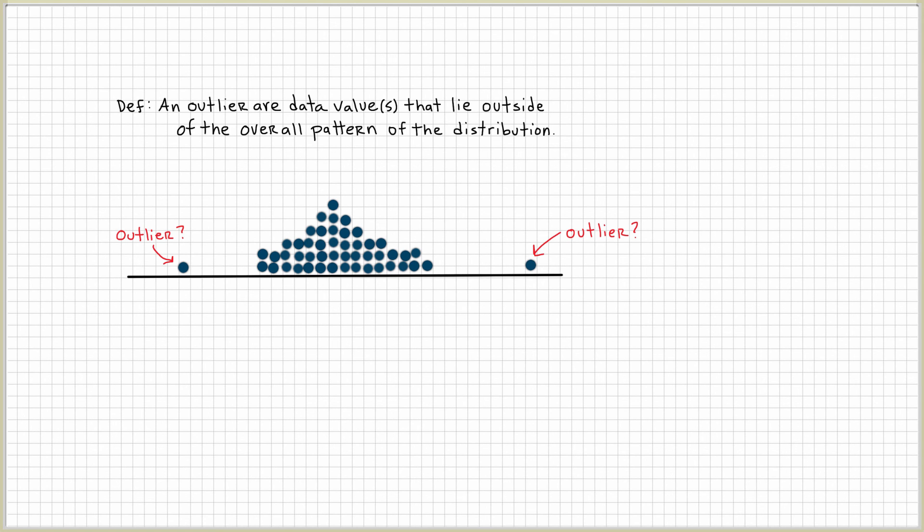By looking at it, it does look like they don't conform to the overall pattern, but there's a math way to figure out if these are outliers. We're going to calculate something called the upper bound value. Any value above the upper bound value, we're going to consider that an outlier.